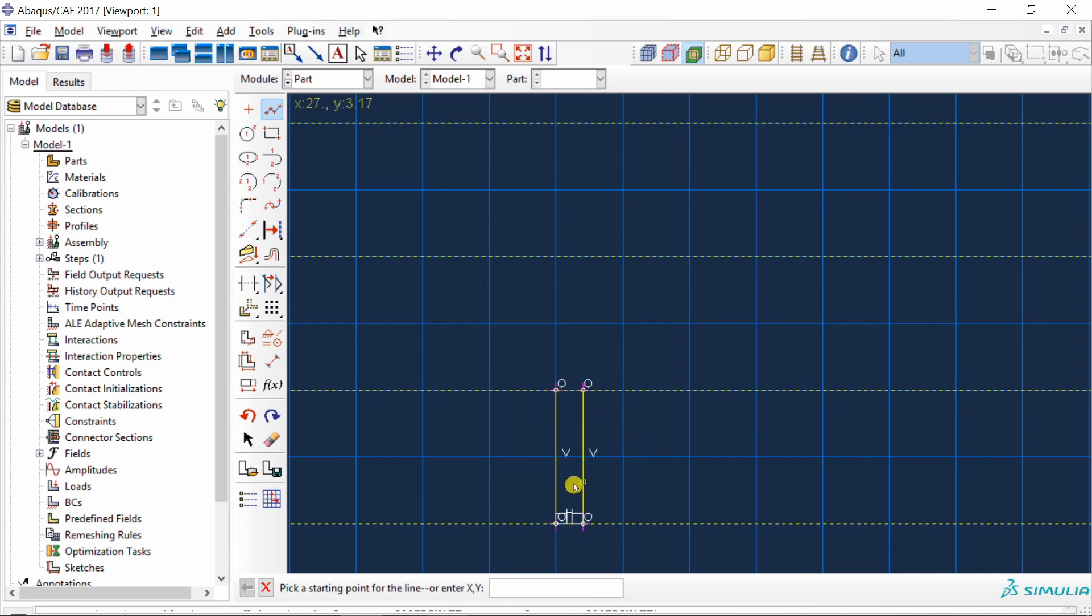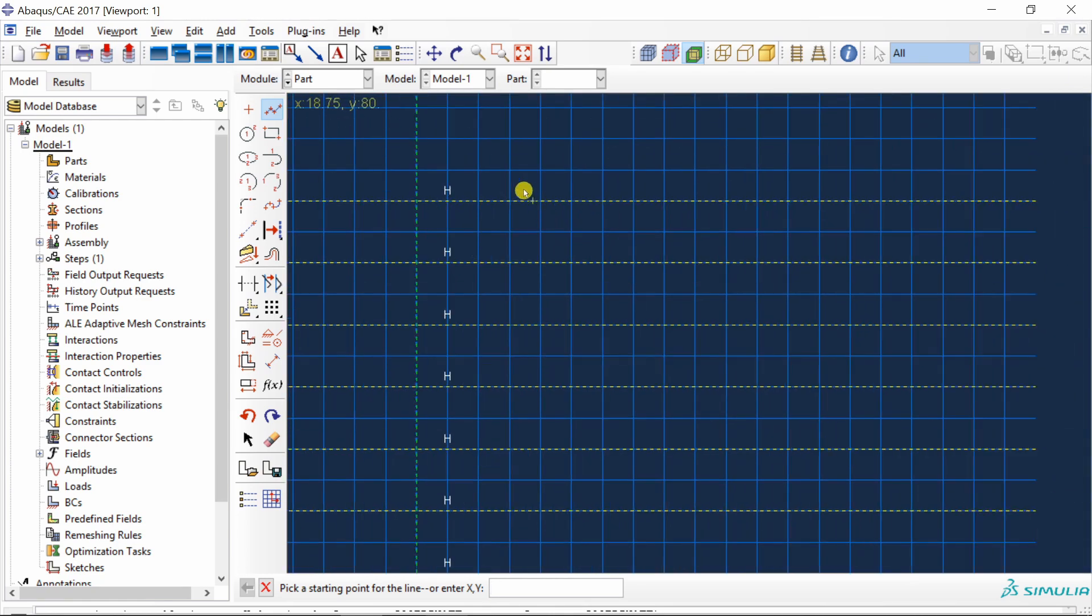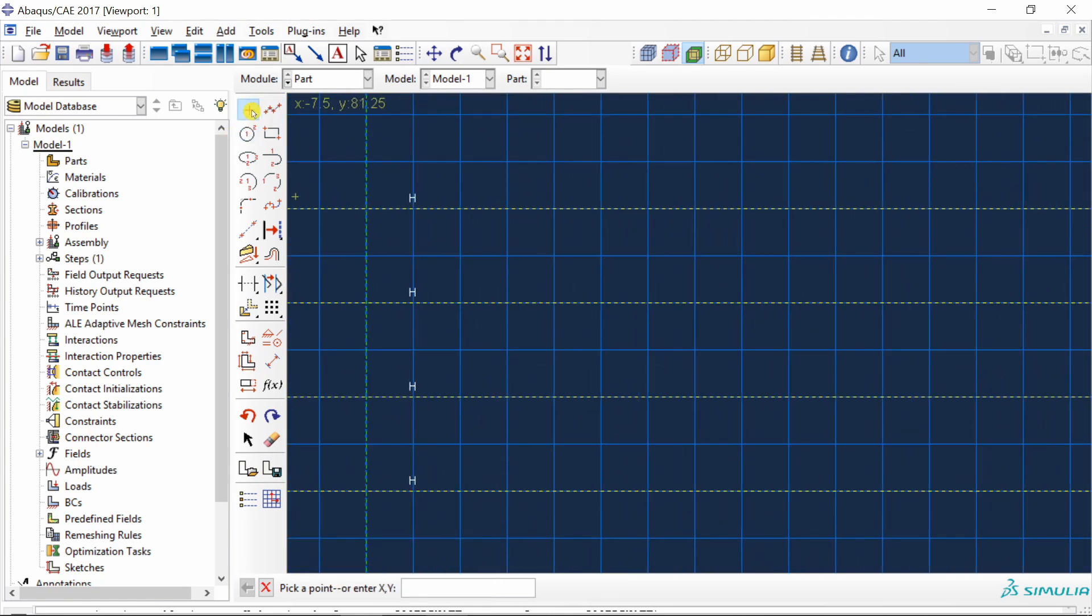And then you can join those points using a line. The thickness of section over here is 2 mm.